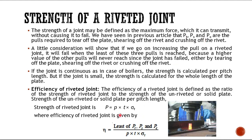The efficiency of the riveted joint is the least of the three parameters PT, PS, and PC divided by the strength of the solid plate, which is pitch multiplied by thickness multiplied by sigma T.